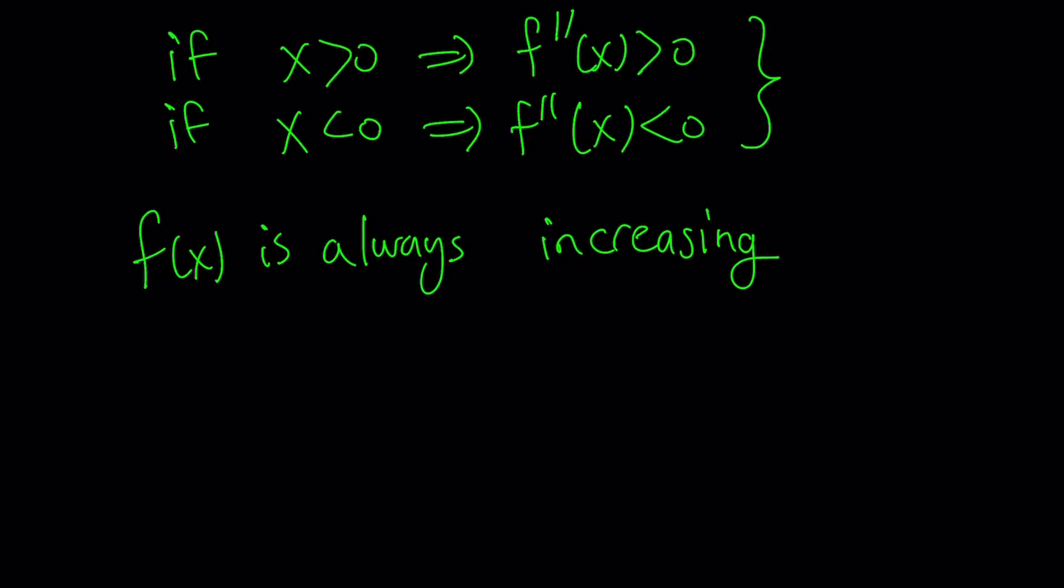All right, so, once we establish that f of x is always increasing, we can say that there's only one root, because a function that is always increasing, and obviously it's defined from negative infinity to positive infinity over the set of real numbers, the domain and the range are both real numbers, so it's going to pretty much cover the whole coordinate plane, so it has to intersect the x-axis. Therefore, there's at least one solution. But in this case, there is only one solution, because f of x is always increasing, and it's going to intersect.